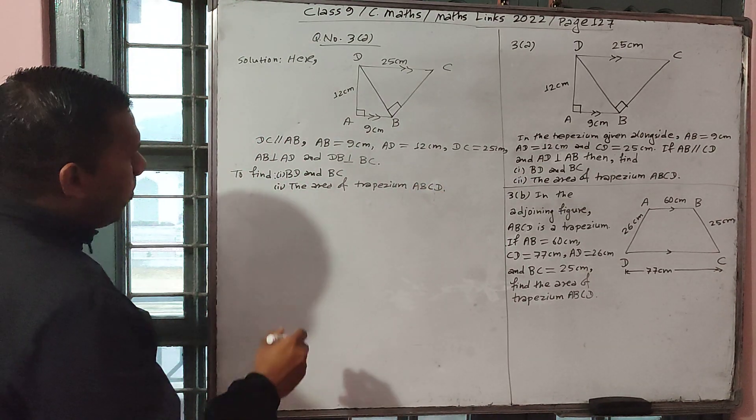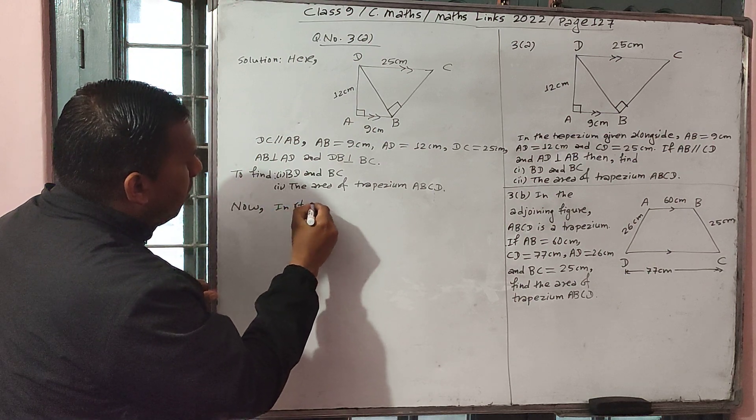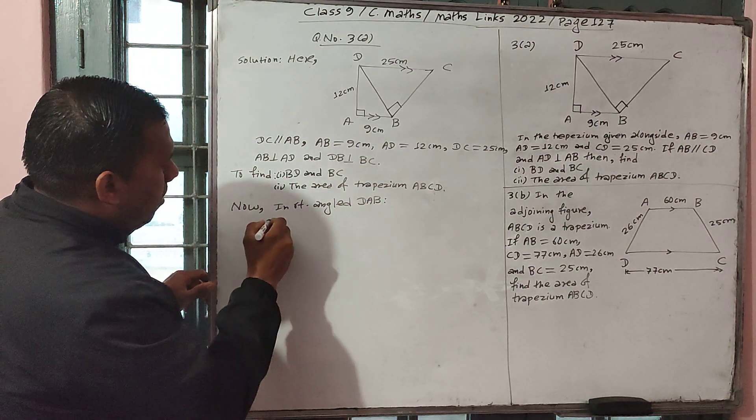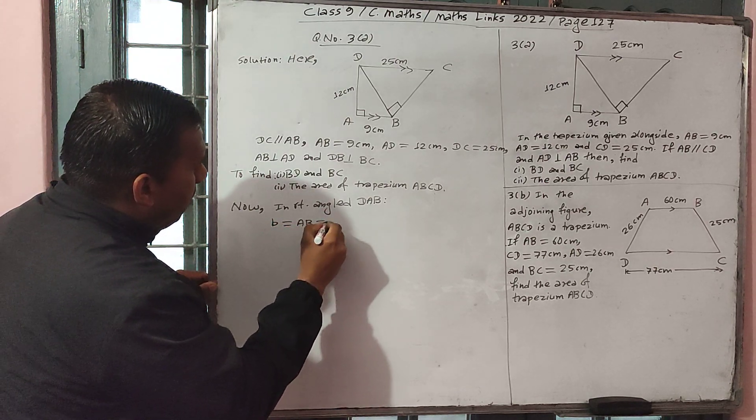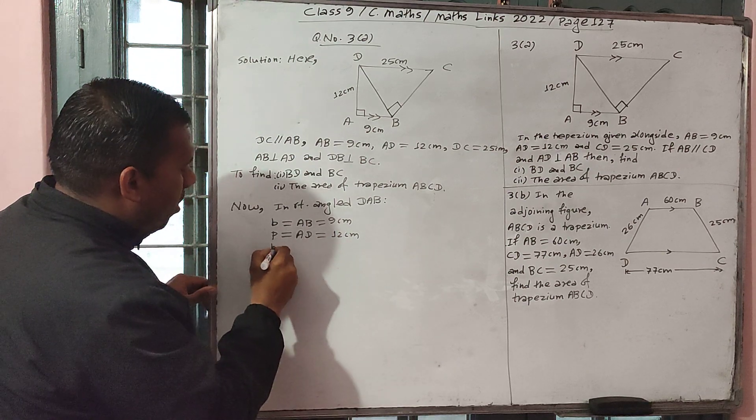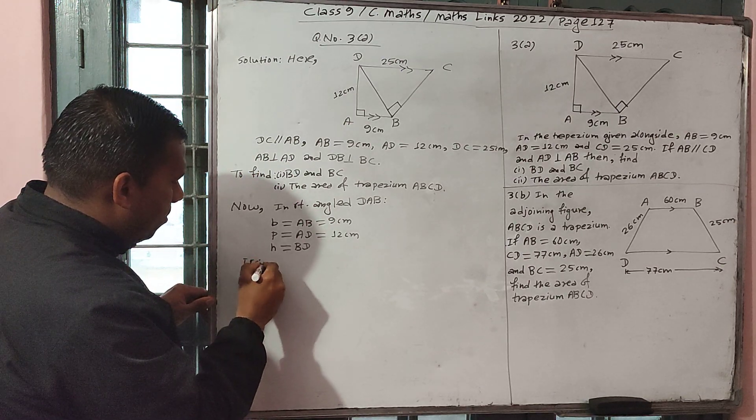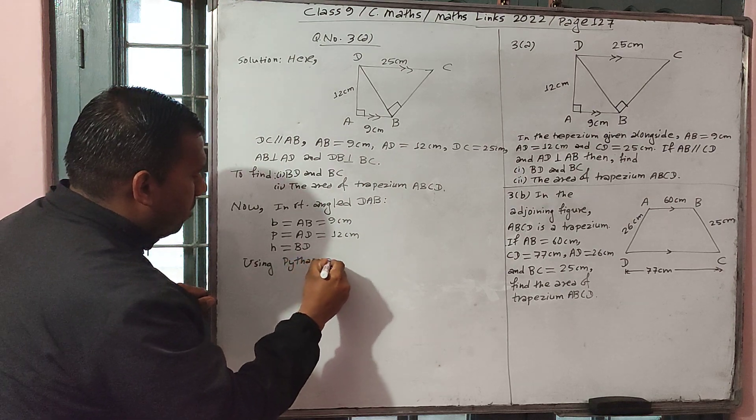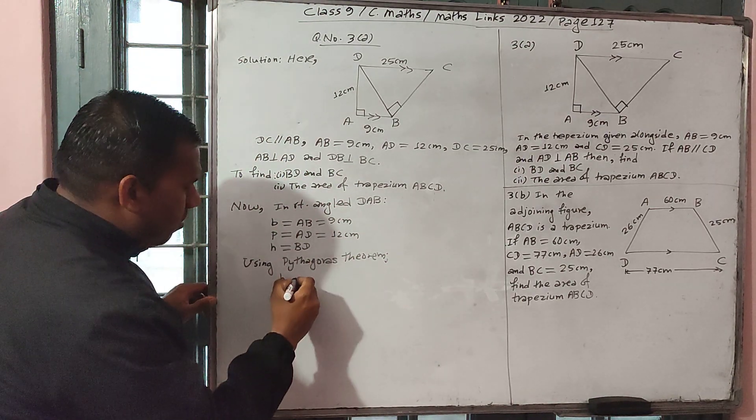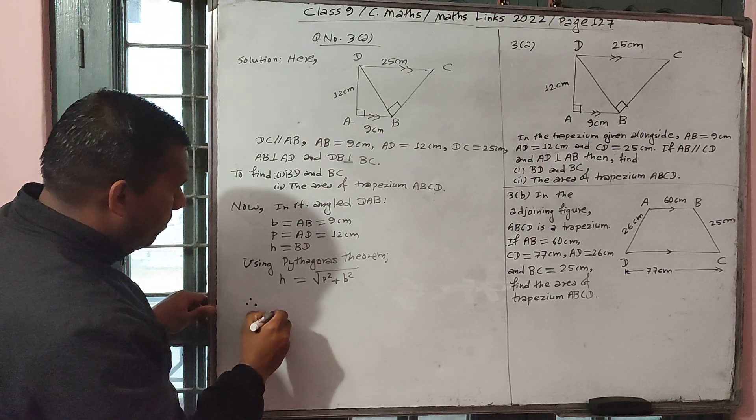Now, in right angle triangle BAD, base equal to AB equal to 9 cm, perpendicular equal to AD equal to 12 cm, hypotenuse equal to BD. Using Pythagoras theorem, hypotenuse square equal to square root of P square plus B square.